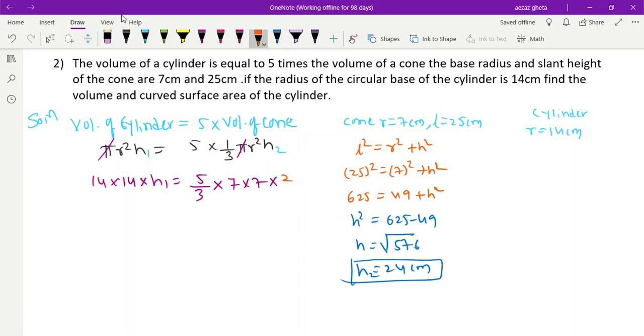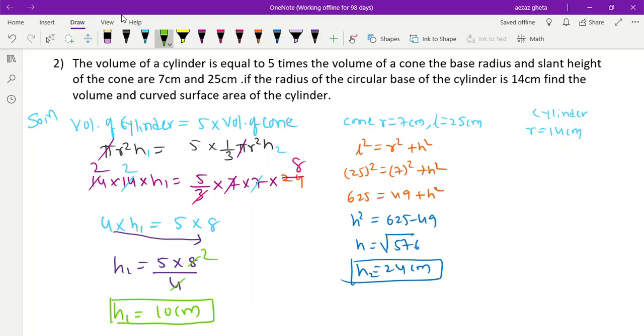Now solving: 14 × 14 × h₁ = 5/3 × 7 × 7 × 24. Simplifying the calculation: h₁ = 5 × 8 ÷ 4. Height of cylinder is 10cm.